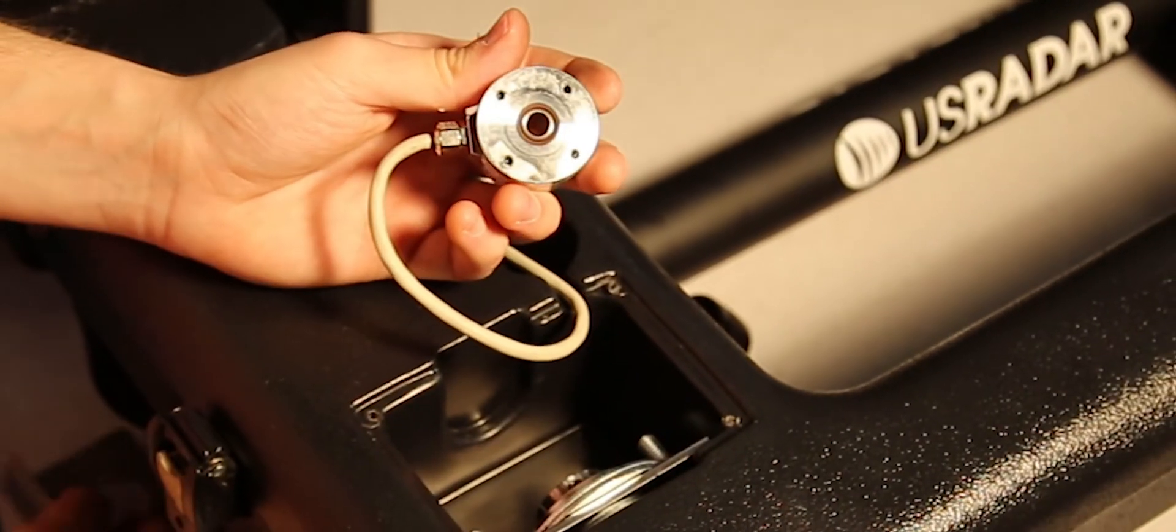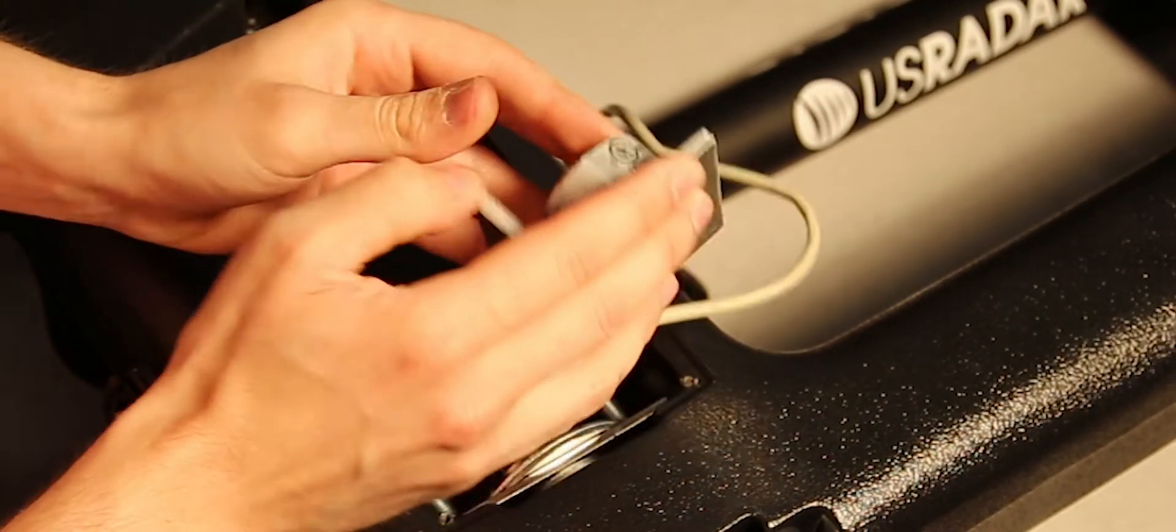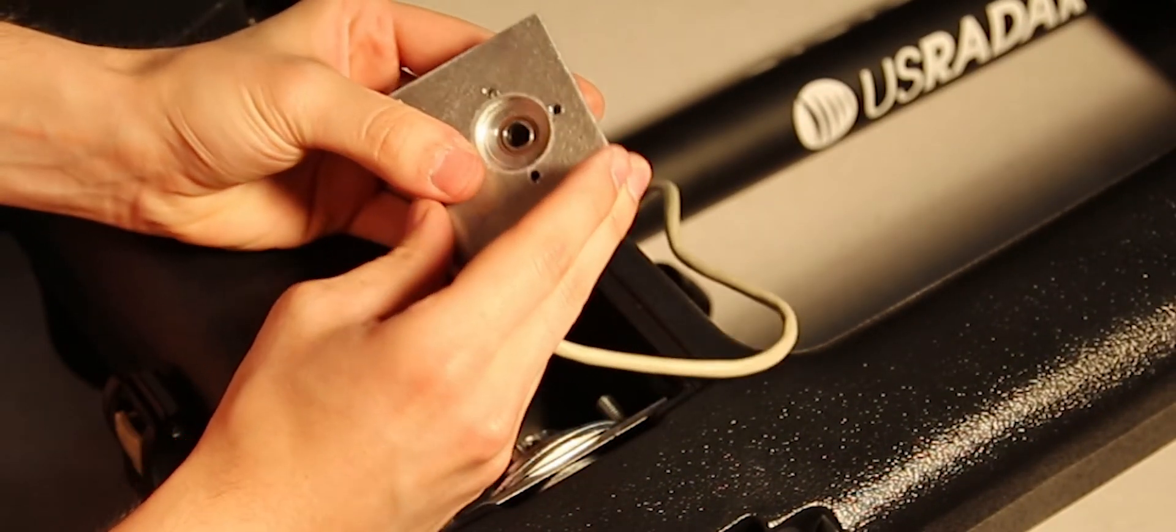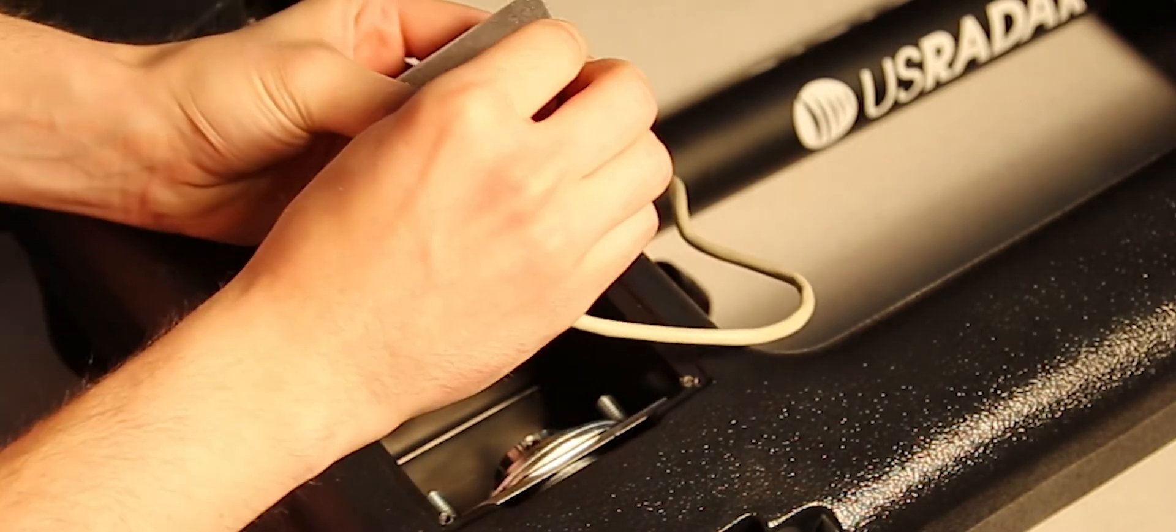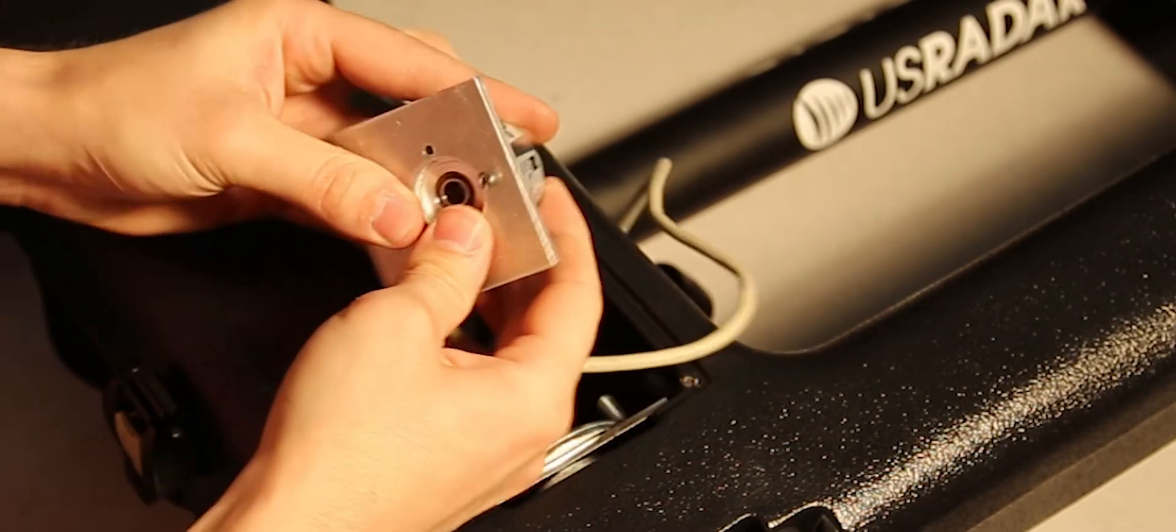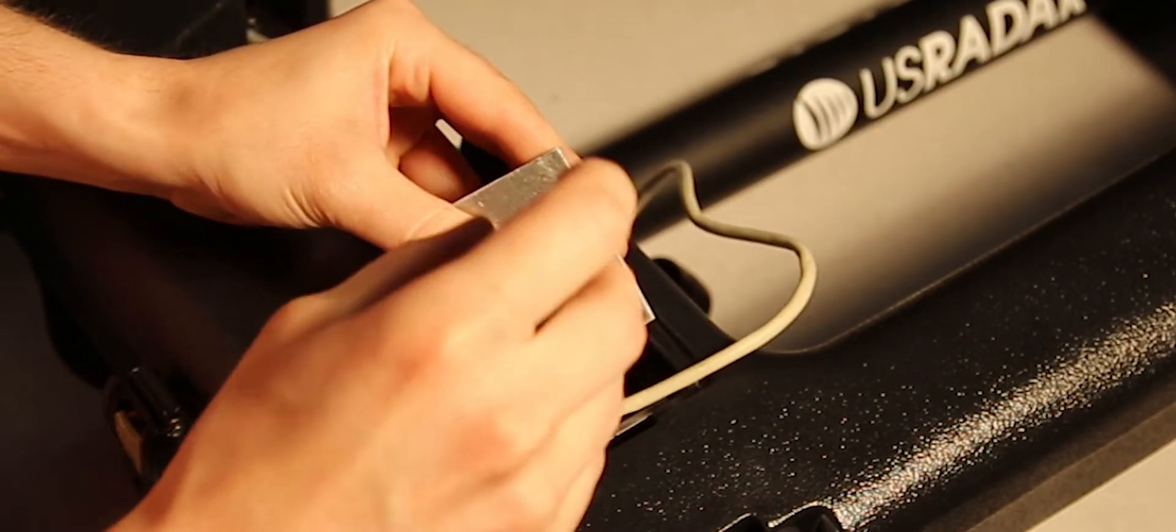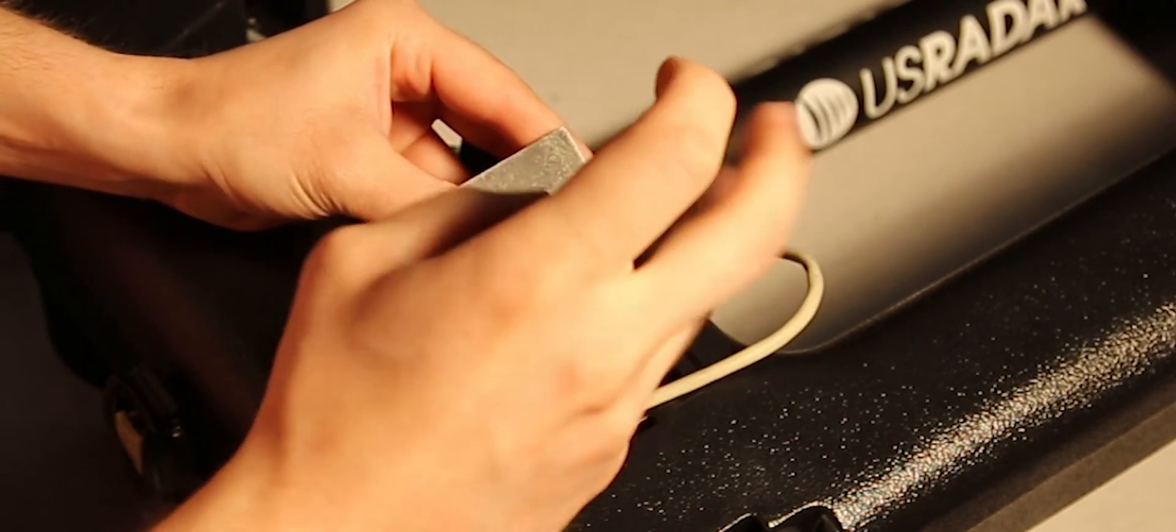Align the encoder to the support plate so that the cable exits towards the bottom left corner. First, flip it over and loosely fit all four screws. Then carefully tighten the screws in a cross pattern, making sure to avoid any stripping. A cross pattern is essential to properly align the encoder to the support plate.